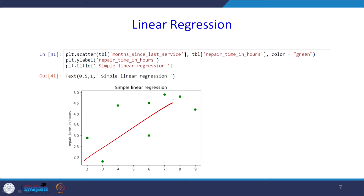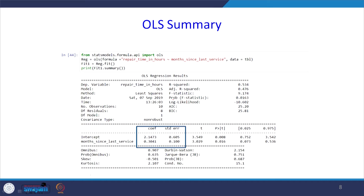This is a simple linear regression considering only one independent variable, which is a continuous variable. When you do the regression analysis, this is the Python output. From statsmodels.formula.api, OLS is used for regression. The dependent variable is repair_time_in_hours, with months_since_last_service as independent variable. The equation is y = 2.1473 + 0.3041 x1. R² is 53.4% and the p-value of the independent variable is significant, less than 0.05.